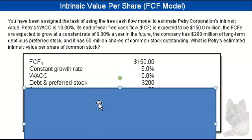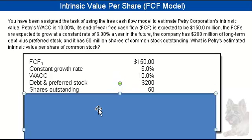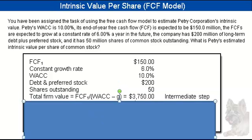The debt and preferred stock they tell us is $200 million. The shares outstanding is 50 million. What we first do is come up with an intermediate step: we determine the total firm value by taking the expected free cash flow of the next period divided by the weighted average cost of capital less the growth rate.